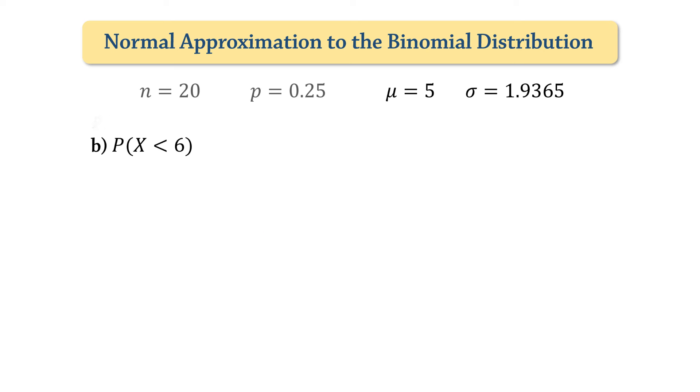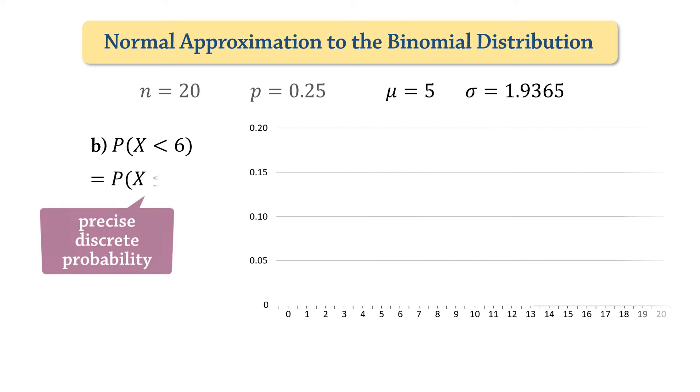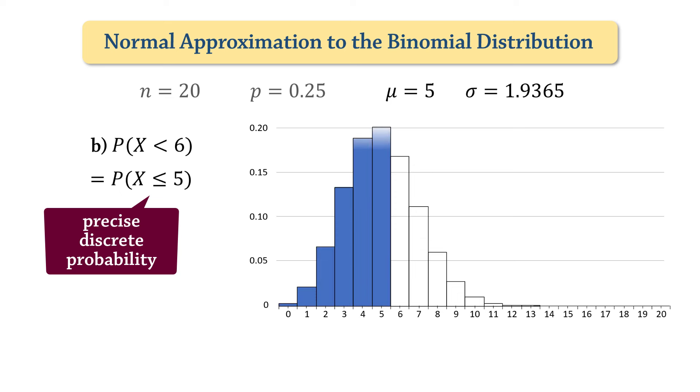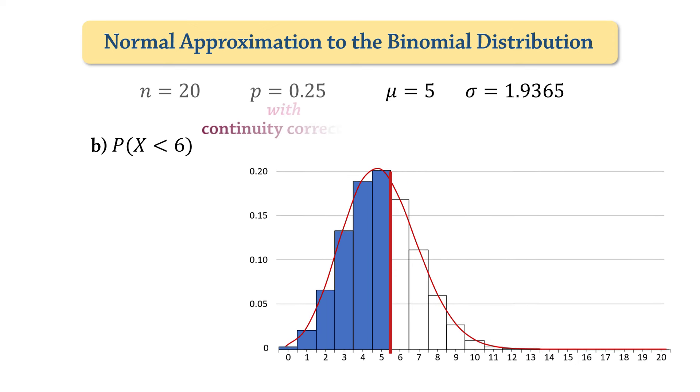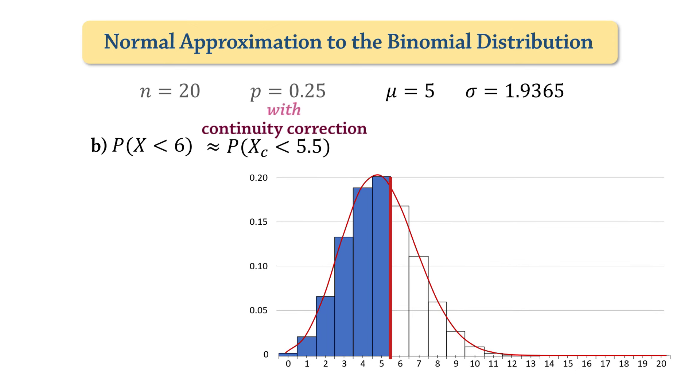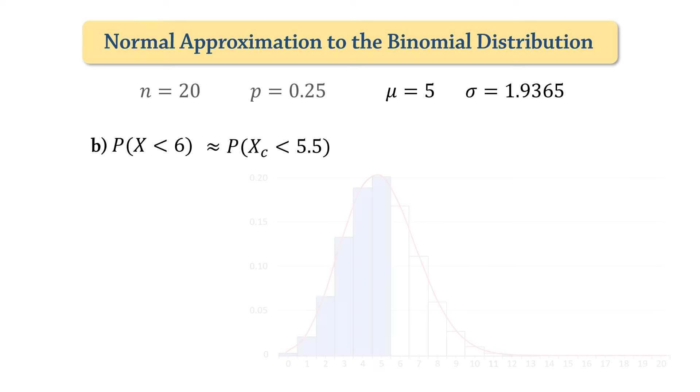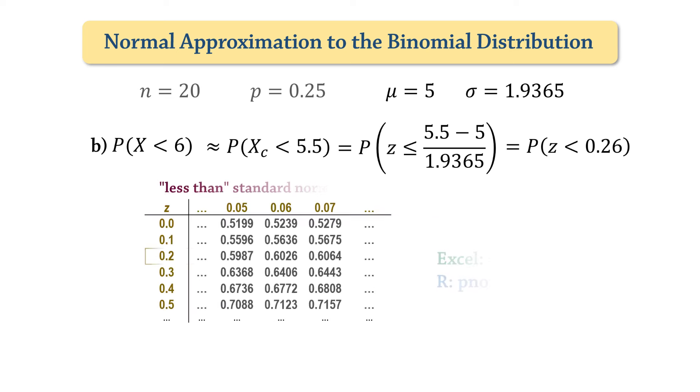Next, we compute the probability that x is less than 6. If we were to use the precise discrete approach, this is the probability that x is less than or equal to 5. Under the curve here, we see that the endpoint of the shaded area corresponds to 5.5. Therefore, the probability that x is less than 6 with continuity correction is the probability that x is less than 5.5. On standardizing, we have p of z less than 0.26, and looking that up yields 0.6026.